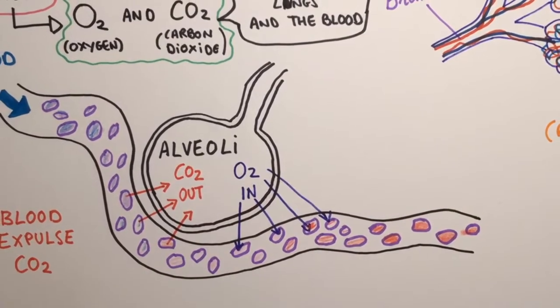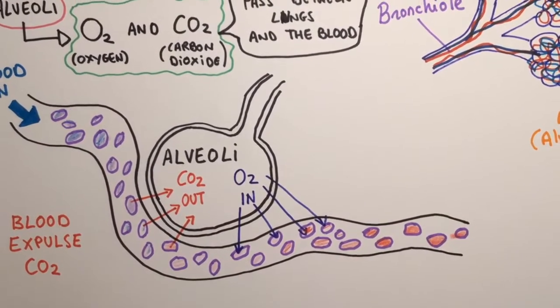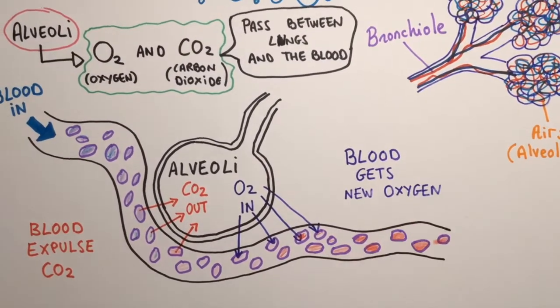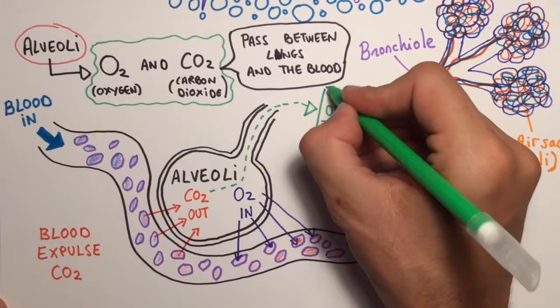The oxygen in the air we inhale passes from the air sacs into the blood. The blood carries the oxygen to all the cells in our body.